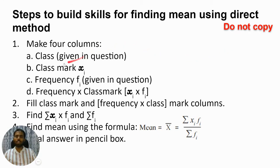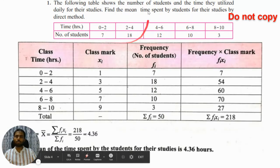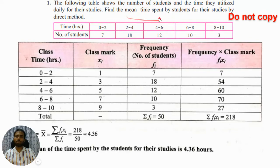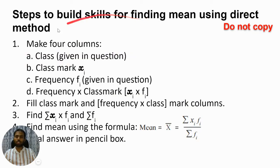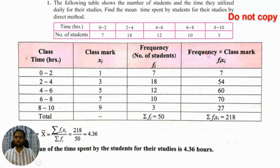These are the steps for finding mean using the direct method. For a question of this type you can use the direct method of finding mean. Let us quickly revise the steps: firstly you make four columns — class, class mark, frequency, and frequency into class mark.